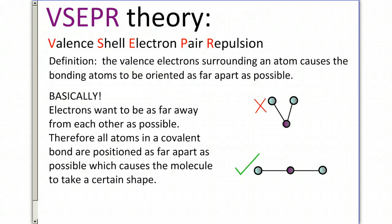The VSEPR theory is an acronym that stands for Valence Shell Electron Pair Repulsion. By definition, it's the valence electrons surrounding an atom which causes the bonding atoms to be oriented as far apart as possible. So basically, electrons want to be as far away from each other as they possibly can.